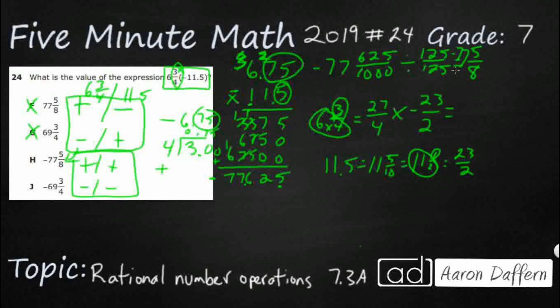So if you really wanted to, you can multiply straight across. But now look what we're having to do. We're going to have to multiply 27 times 23, whatever that is, over 8. And then we're going to have to turn that improper fraction back to a mixed number, which is going to end up being your H, negative 77 and 5 eighths.